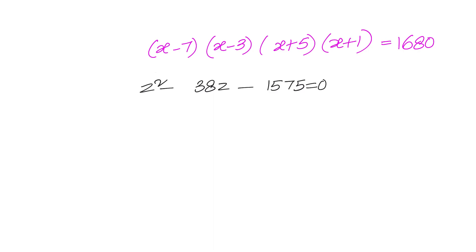Now, 1575 we have to split into 2 groups such that the sum equals to minus 38. So let us write down the prime factorization of this. We have 5, 5, 25, 7, 3, 3. So we will take this whole thing as one group and another group so that we have 63 minus 25 is 38.